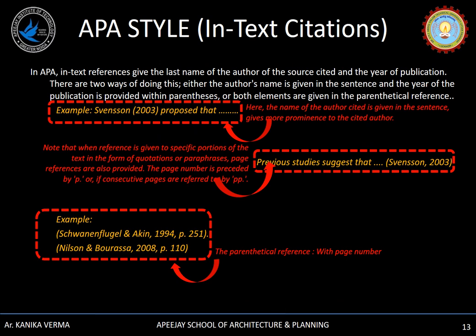How to apply APA style in in-text citation: you can present it two ways. First, when you want to emphasize the author's name, you write the name first, then the year of publication in parentheses, then elaborate the statement — for example: 'Stevenson (2003) proposed that...' However, if you don't want to emphasize the author, you give the citation after the statement in brackets — for example: 'statement (Stevenson, 2003).' When page numbers are known, you can also provide them.